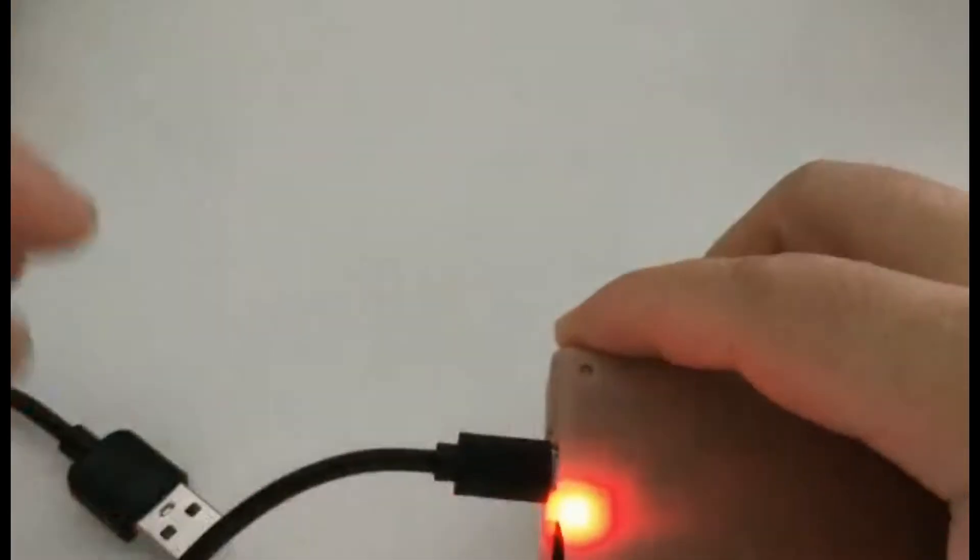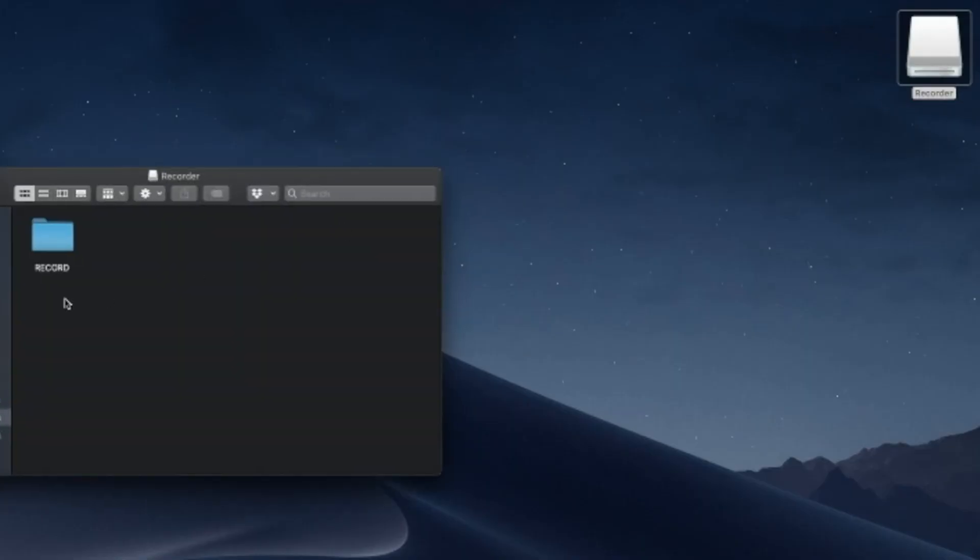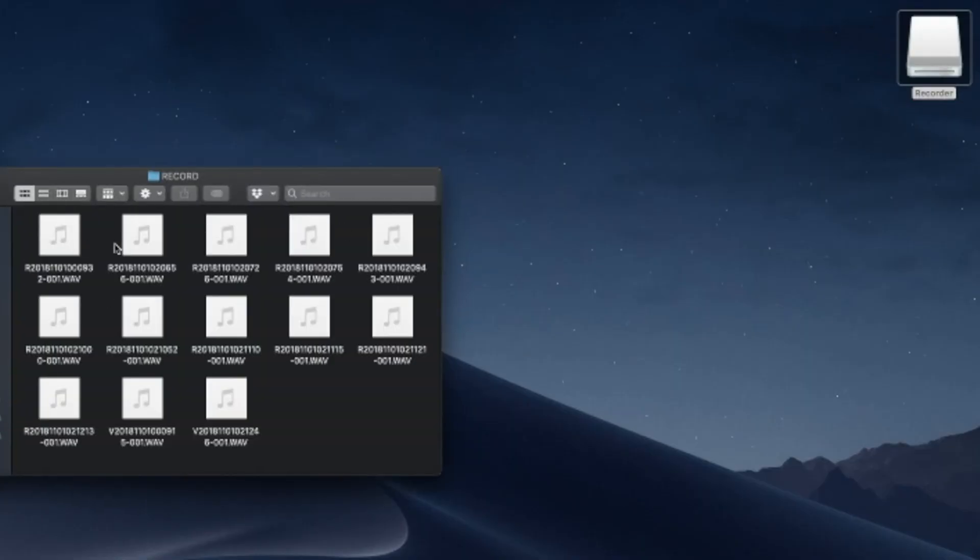Connect it to PC or charger via USB cable for charging. The LED light turns on. When connected to PC, the computer will recognize it as a removable disk. Double click to open it. You can copy and edit the files.